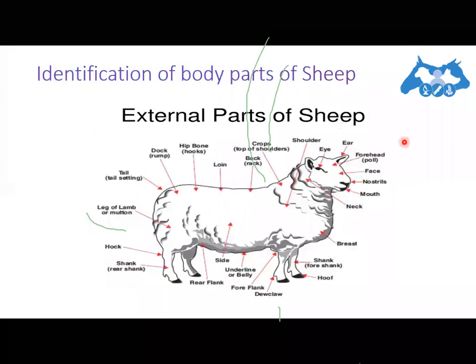For sheep, almost everything is the same but hooves are present. The mammary gland structure is different because the udder of the sheep contains only two teats. The rump of sheep is known as the dock, and that's it.